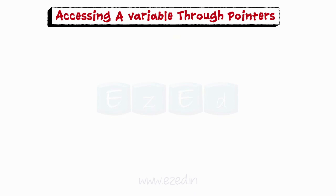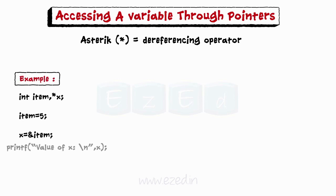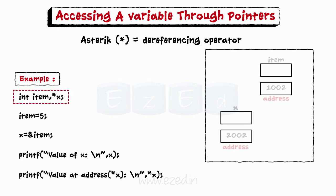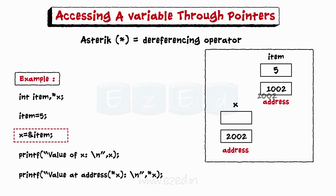Now, let's see how we can access a variable through pointers. A variable can be accessed using the unary operator that is the asterisk. It is also called as indirection operator or dereferencing operator. Here is an example to show the use of indirection operator. The first line declares item as an integer variable and x as a pointer variable, pointing to an integer. The second line assigns the value 5 to item and third line initializes the pointer x with the address of item.